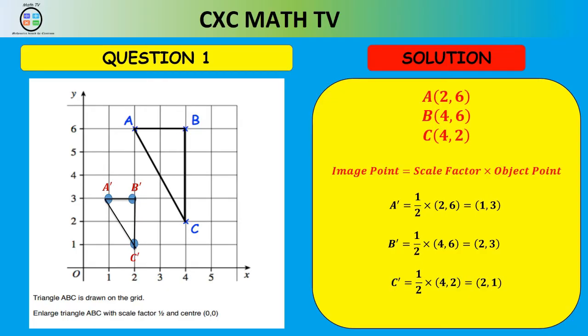We can show the triangle on a separate diagram. To justify, draw lines through each point and its image point and you'll see they all pass through the origin.